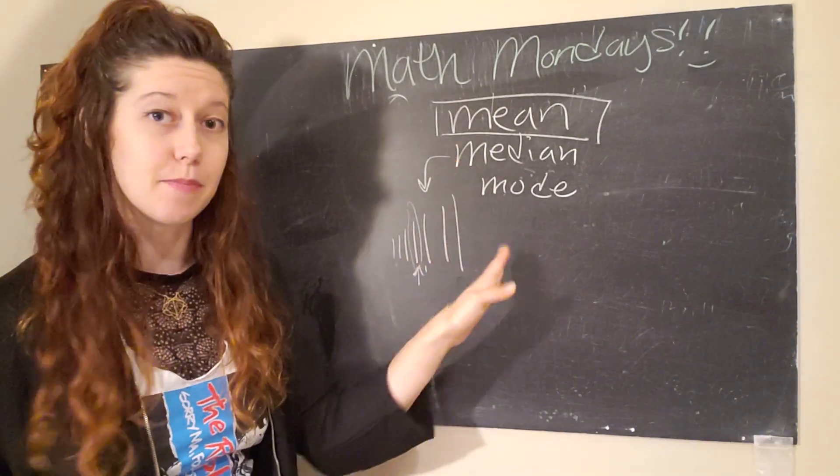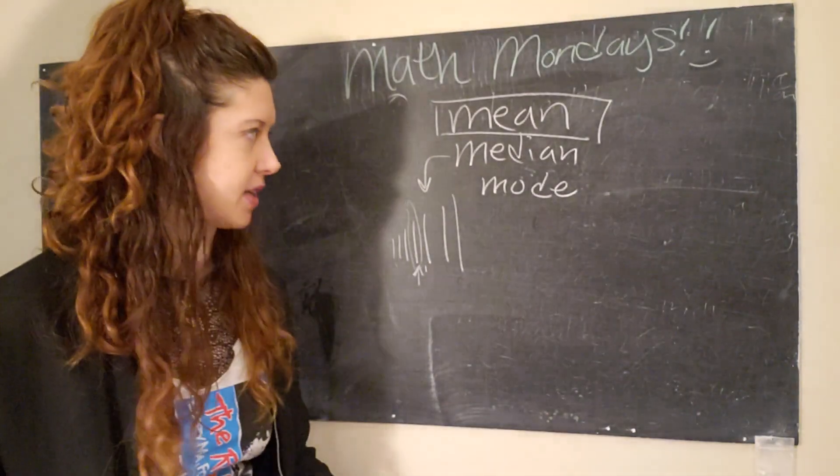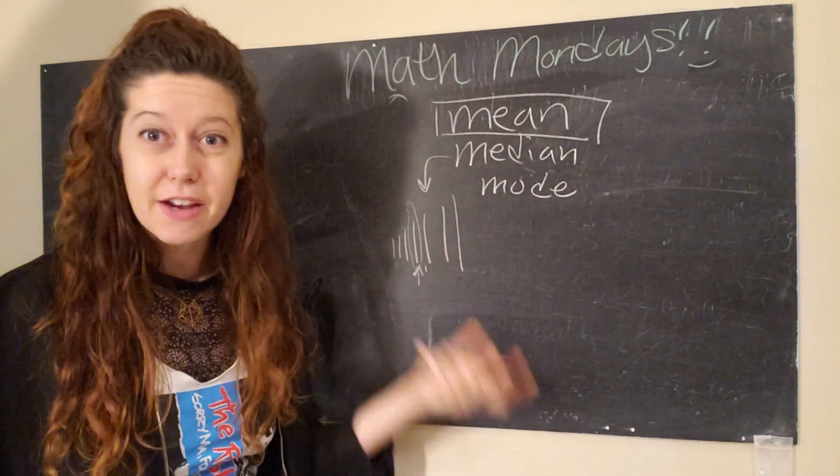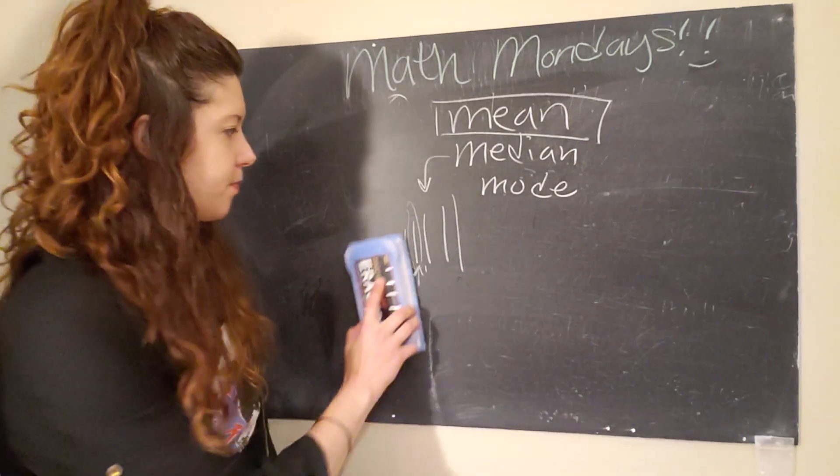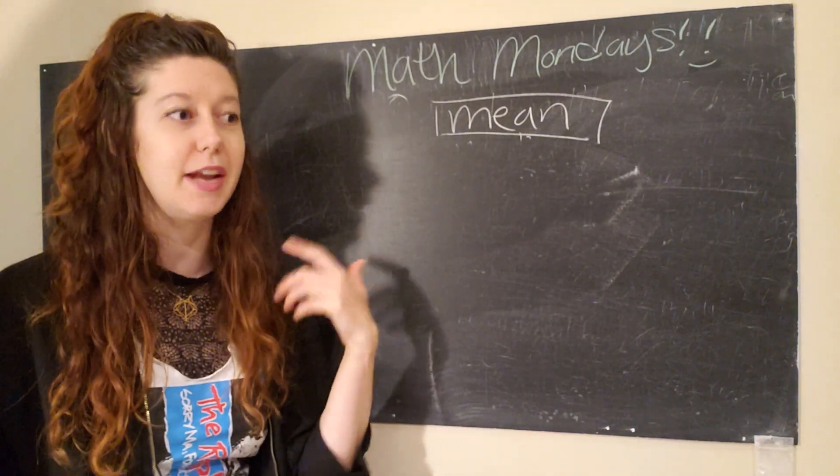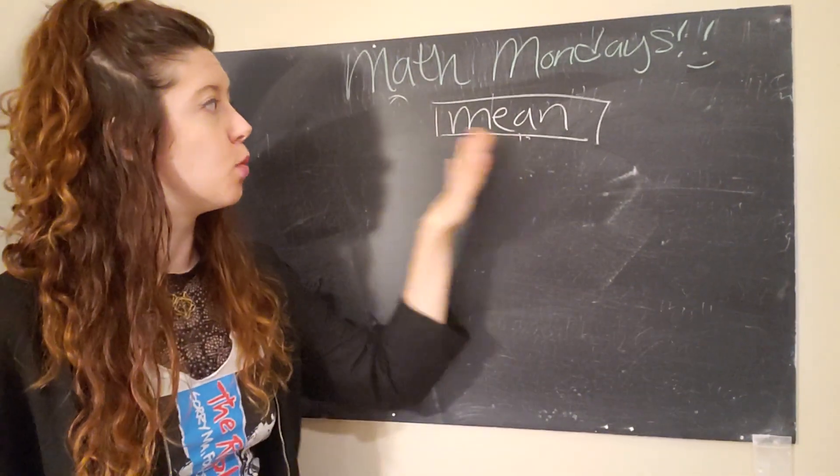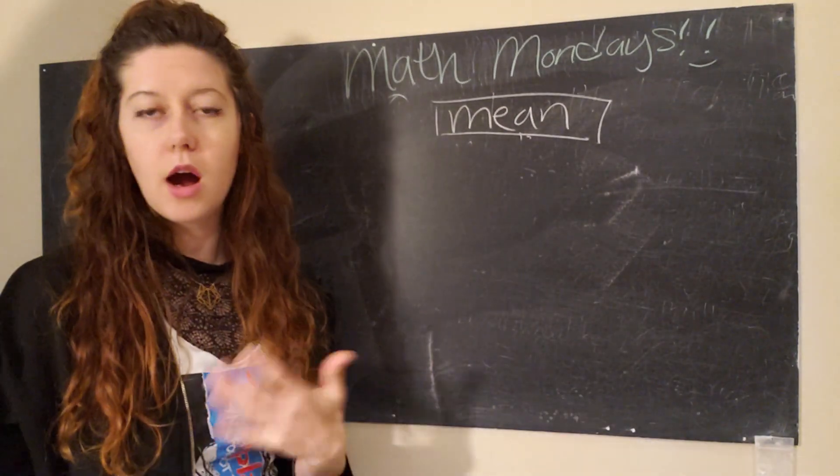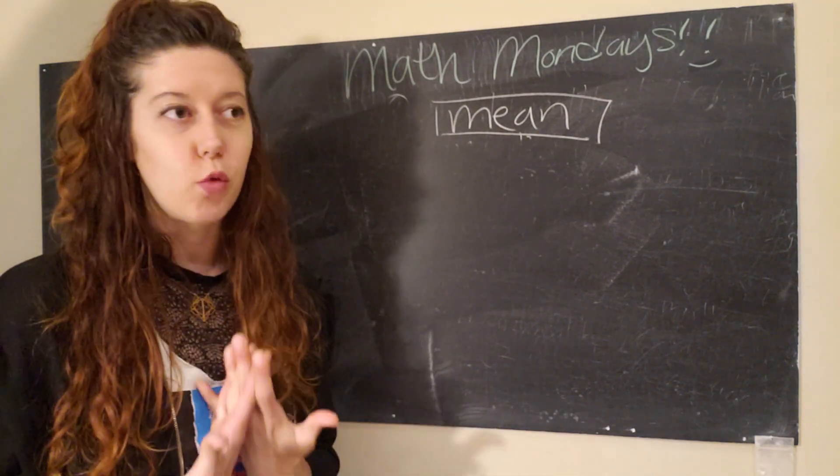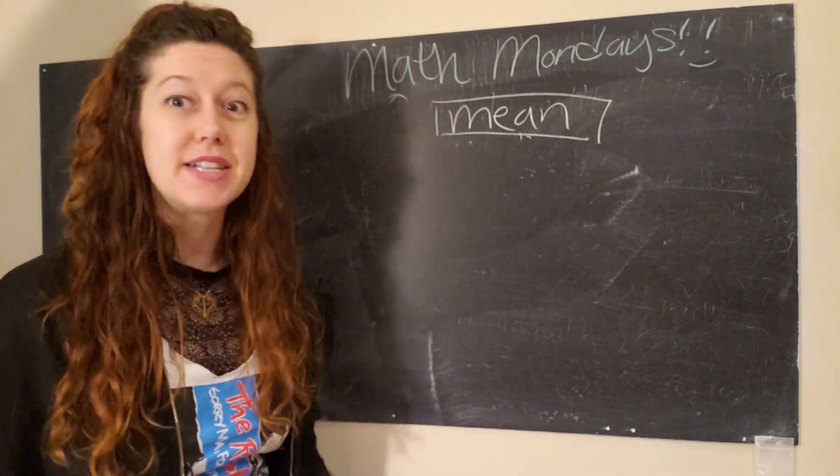Cool. So, median is the middle. Mode is most popular or most common, I guess, is a better way to phrase it. So, these three concepts mean very different things in mathematics. And it's really important that we understand them so that we can understand what information those concepts are giving us and what information they're not giving us. So, mean is basically the value that we would get if we were to share something equally among everyone in a dataset.